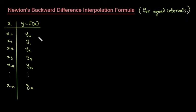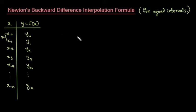For equal interval data points, we know that x0, x1, with the same step size h between x points. Corresponding y values are y0, y1, and so on. Based on these data points, Newton's backward difference interpolation formula is given as follows.